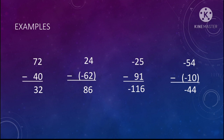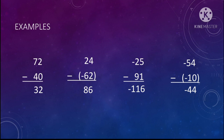Next is 24 minus negative 62 — positive minus negative. As the sign rule states, positive minus negative is equal to positive. It is similar to 24 plus 62, since negative multiplied by negative is equal to positive, and that would be equal to 86.